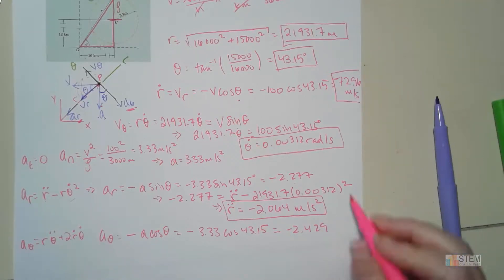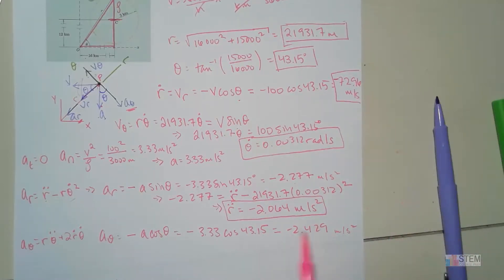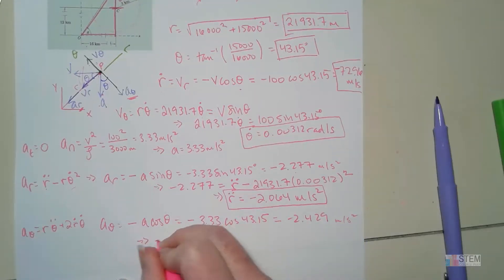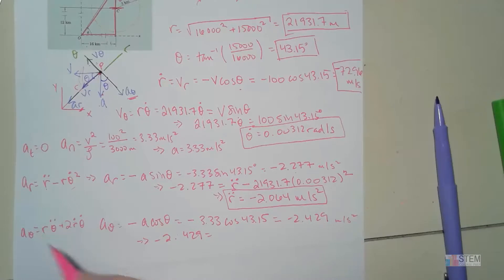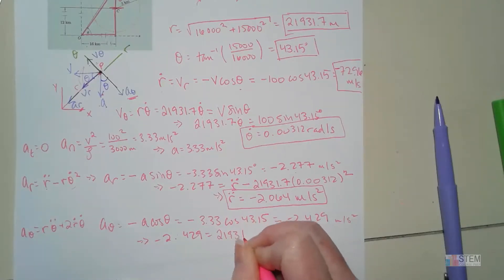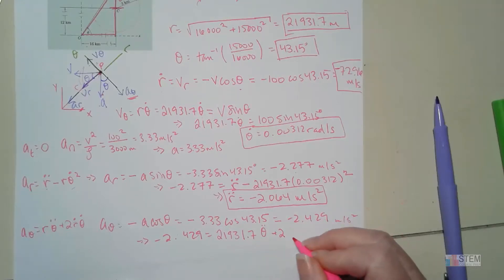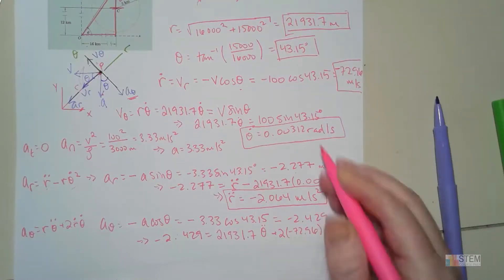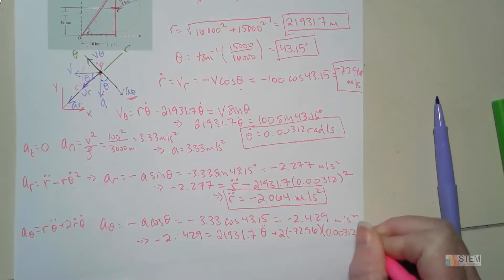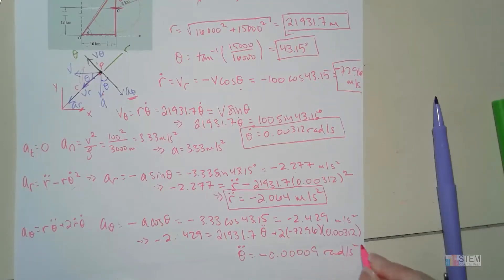Setting this equal to rθ̈ + 2ṙθ̇: −2.429 = 21,931.7 · θ̈ + 2 × (−72.96) × 0.00312. Solving for θ̈ gives θ̈ = −0.000009 radians per second squared. You should carry units through all your calculations.